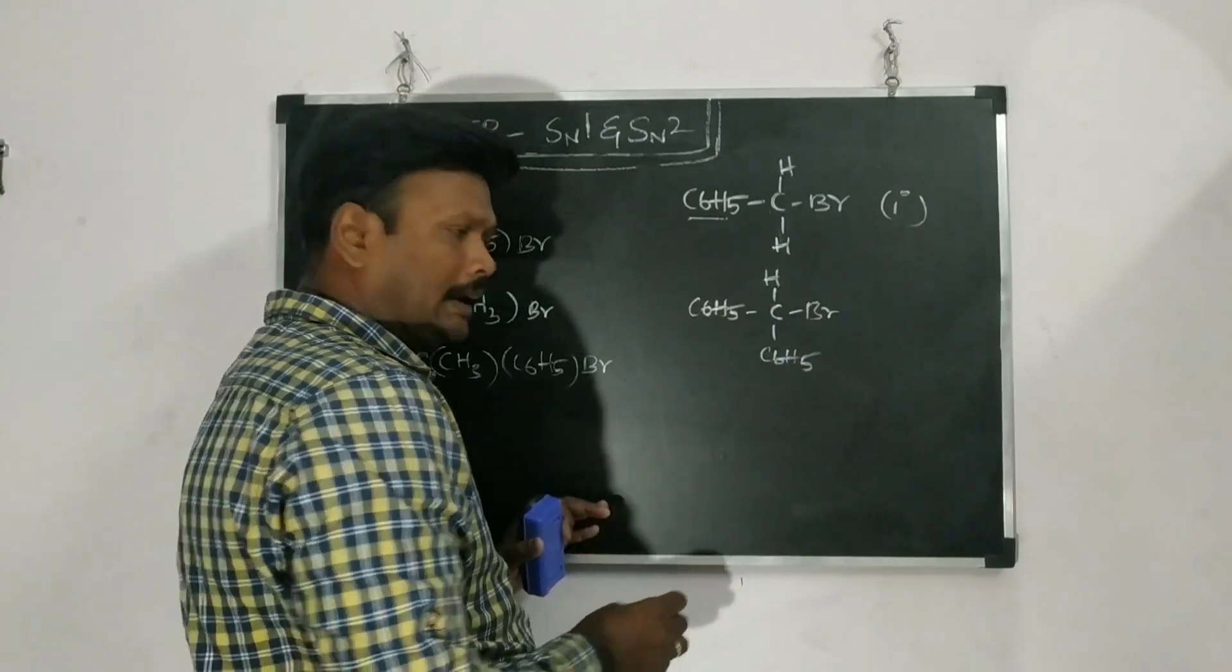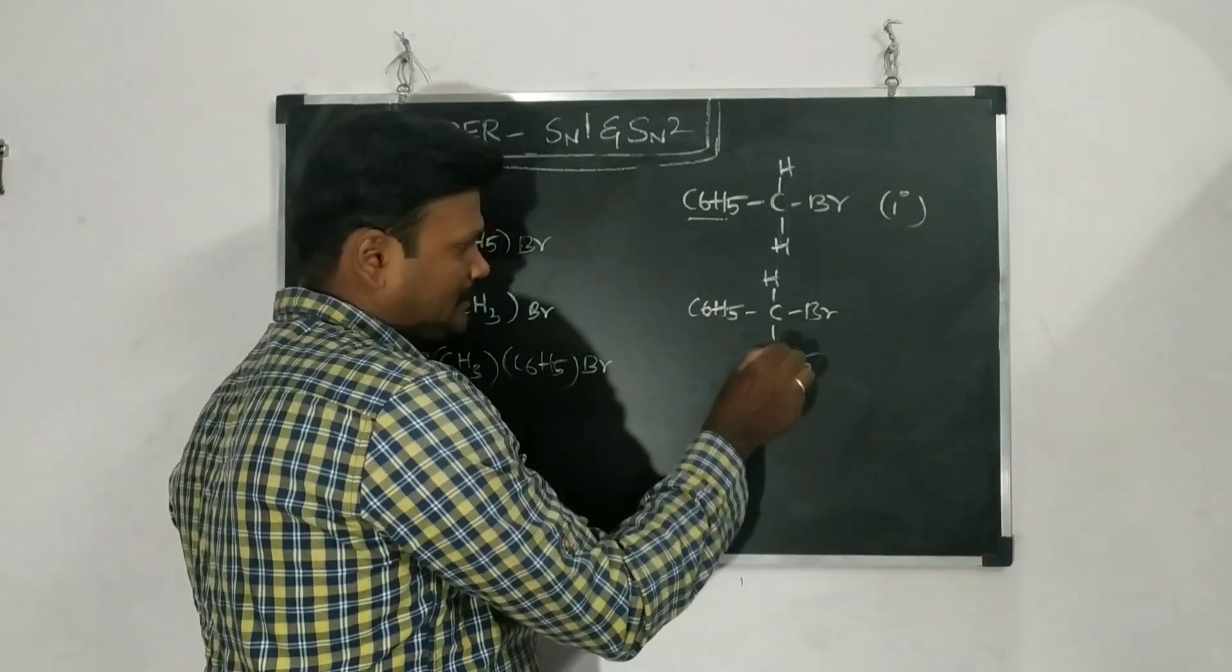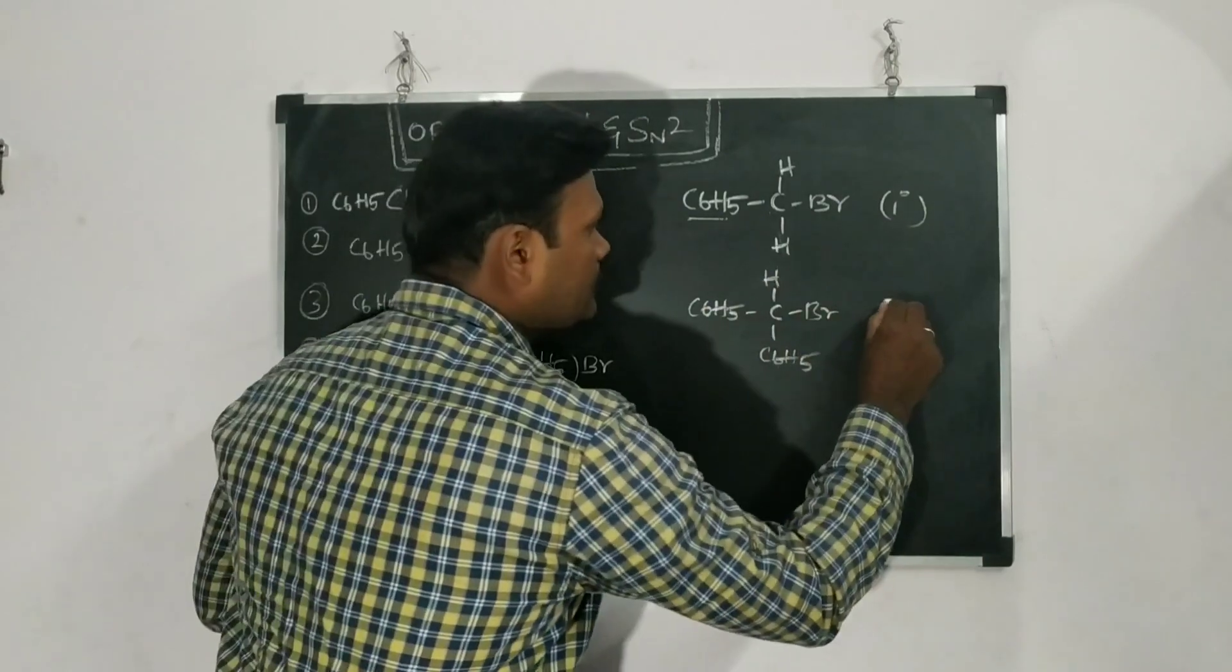So what about the degree? So the functional group is there. Carbon is there. Carbon is attached to two carbons. So that it is 2 degree.